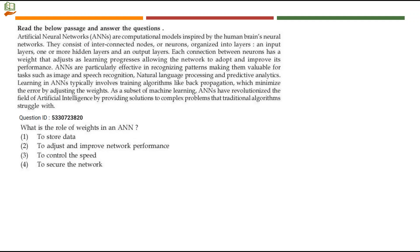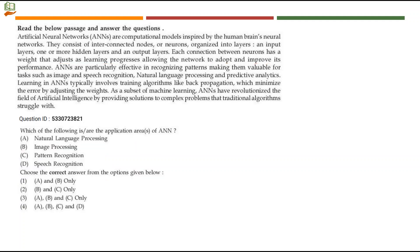Next question: what is the role of weights in an artificial neural network? Only by adjusting the weights can we improve performance. There is an actual output and a predicted output; when we train the neural network again and again, the predicted output should match the actual output, minimizing the error by updating the weight. Overall, weight updation allows the neural network to improve its performance. Option number 2 is the right answer — weights do not store data, control speed, or handle network security.